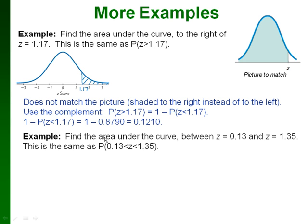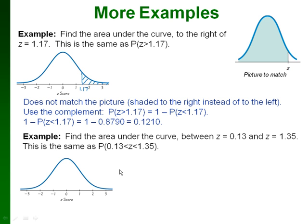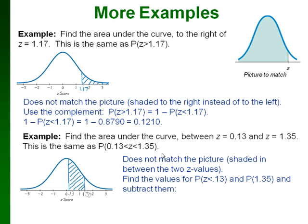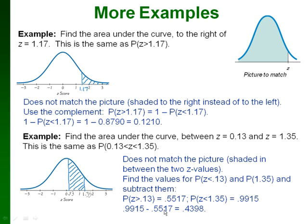Another example: finding the area between two z values — between z equals 0.13 and z equals 1.35. We draw in 0.13 and 1.35 and shade in between those two, and that doesn't match our table picture. To find the probability between two values, we find the probabilities for each one from the table or Excel and subtract. The probability that z is less than 0.13 is 0.5517, and the probability that z is less than 1.35 is 0.9915. Subtracting gives us 0.4398.